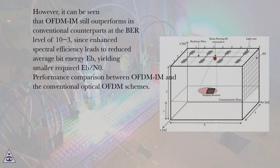However, it can be seen that OFDM-IM still outperforms its conventional counterparts at the BER level of 10^-3, since enhanced spectral efficiency leads to reduced average bit energy Eb, yielding smaller required Eb/N0.